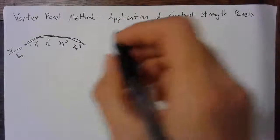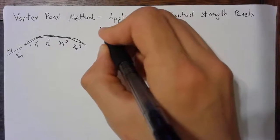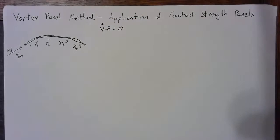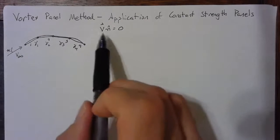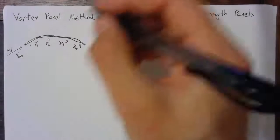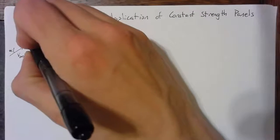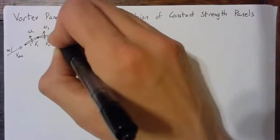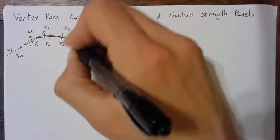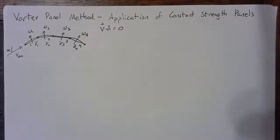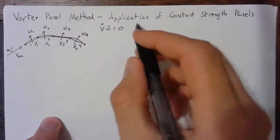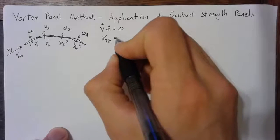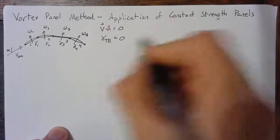Now, if you remember, our boundary condition is that the velocity dotted with the normal is equal to zero at all points. With the vortex panel method, we can't satisfy this at every point, so we have to choose some points. The points that we choose are the midpoints of these panels. We're going to look at the upwash of various panels one through four. Our other boundary condition is that the gamma at the trailing edge — the circulation at the trailing edge — has to be zero, and this is known as the Kutta condition.